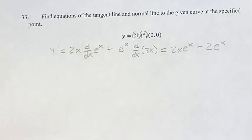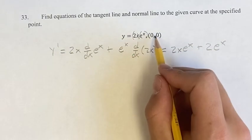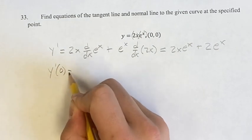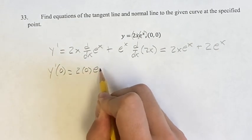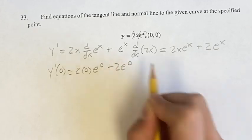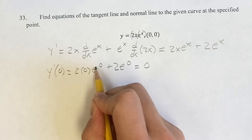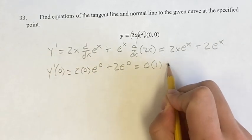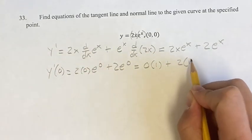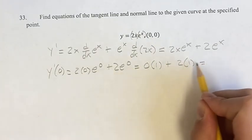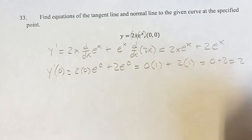So this is the derivative. We're going to look for it at a certain point, though, which is going to be 0. So y prime of 0 equals 2 times 0 e to the 0 plus 2e to the 0, just plugging in 0 for everything. We get 0 times e to the 0 is 1, plus 2e to the 0 is 1. This is 0 plus 2, which is 2.